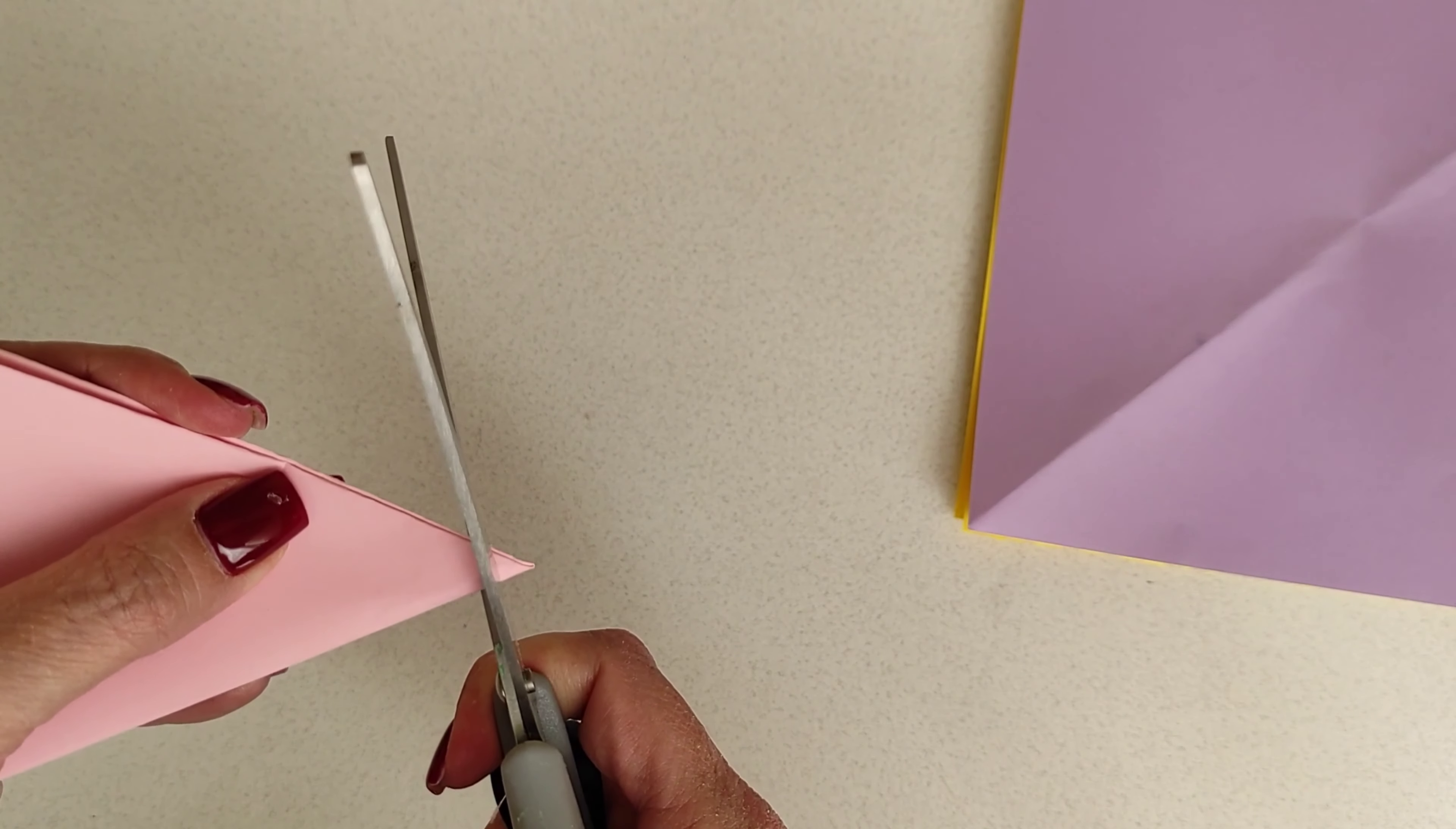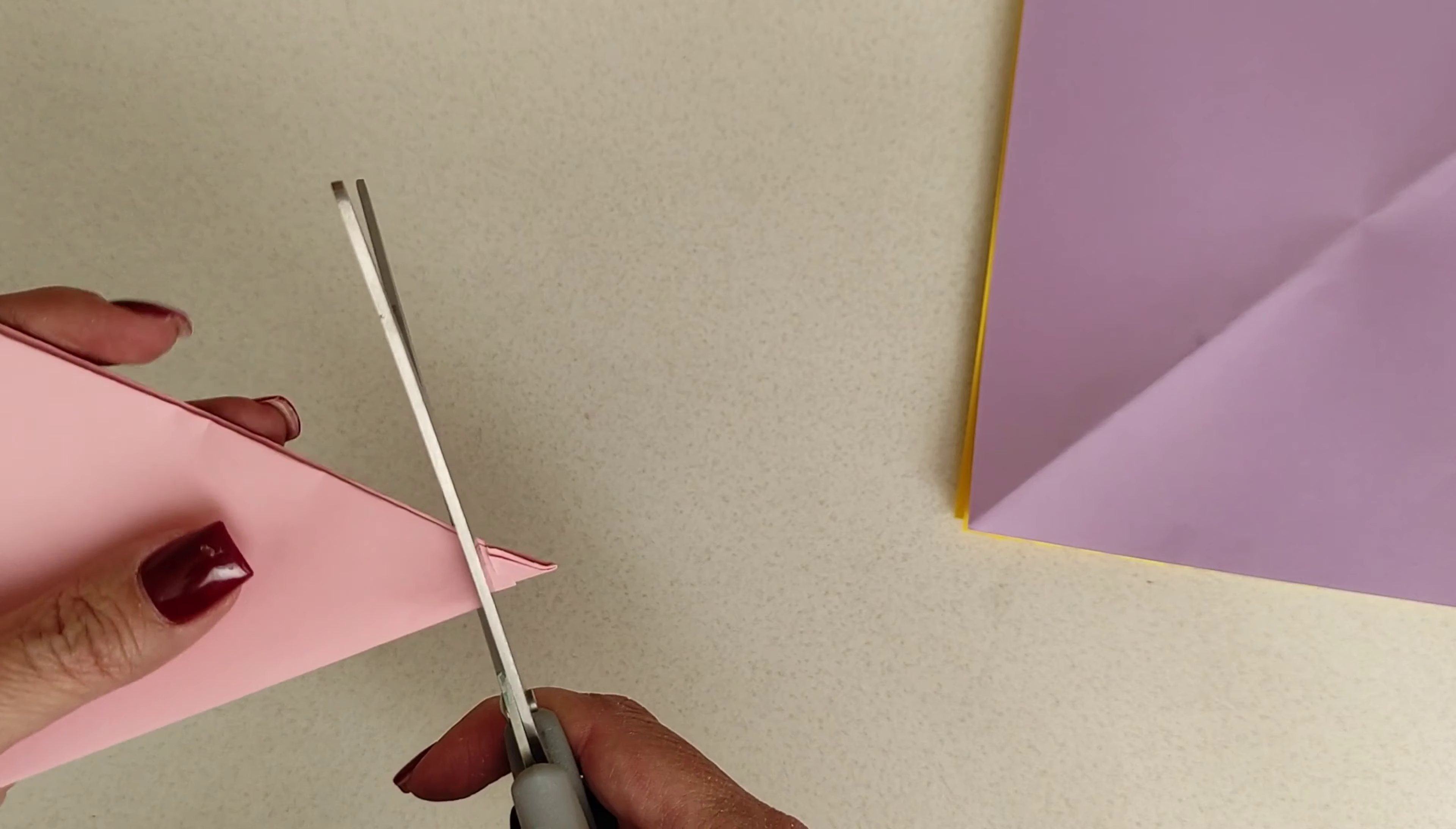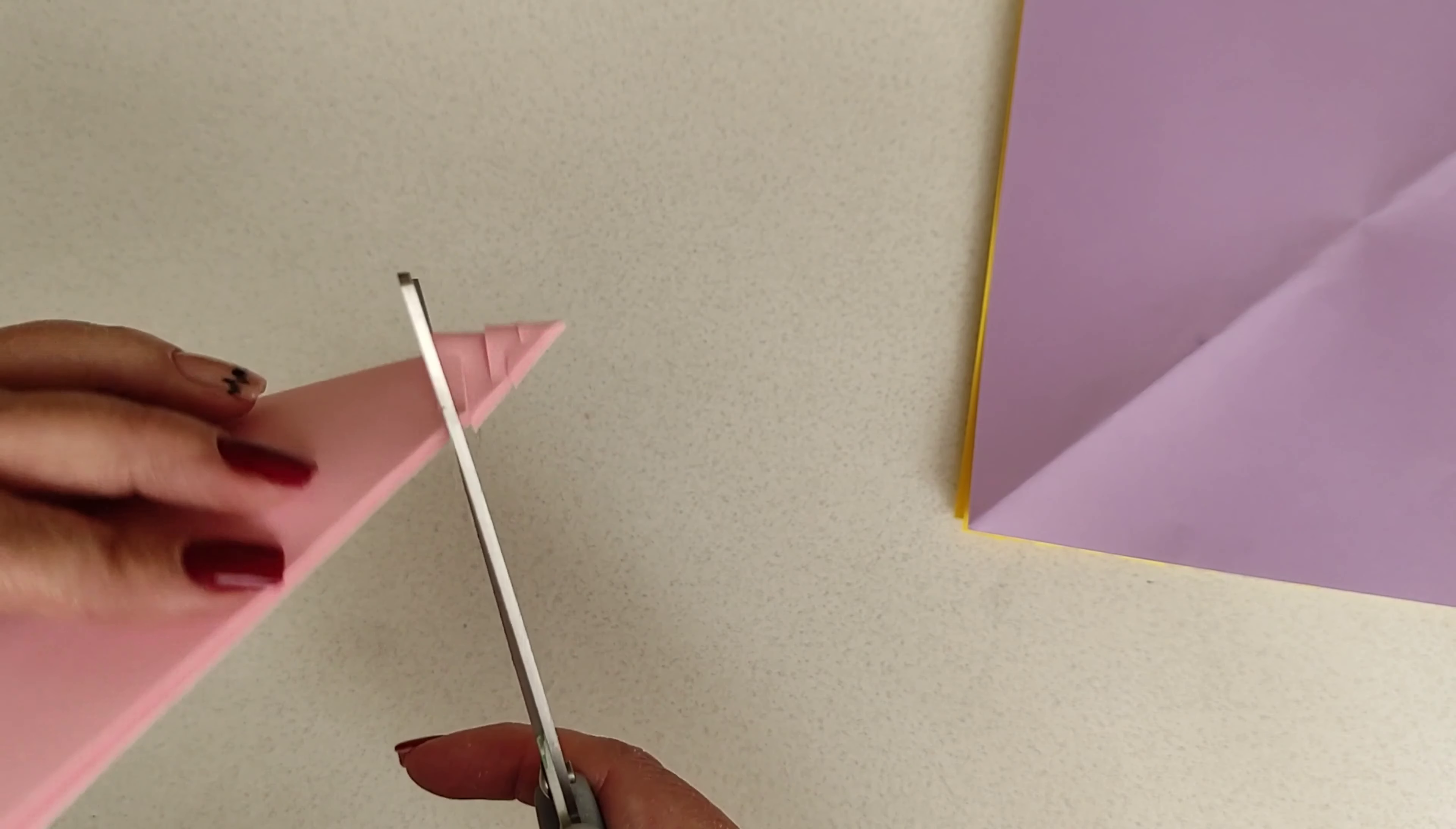Now we're going to start at the tip of one of the corners and we're going to make small cuts. Make one cut, turn it around, cut from the other side and then turn it back around again. Be careful not to cut all the way through.